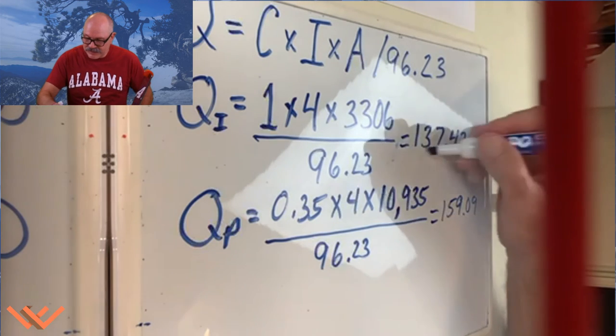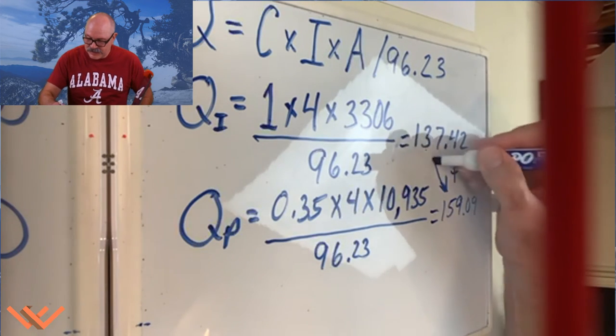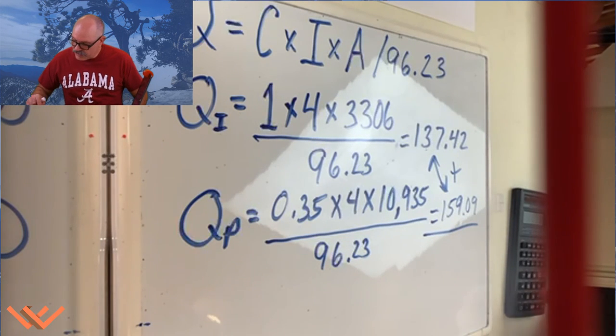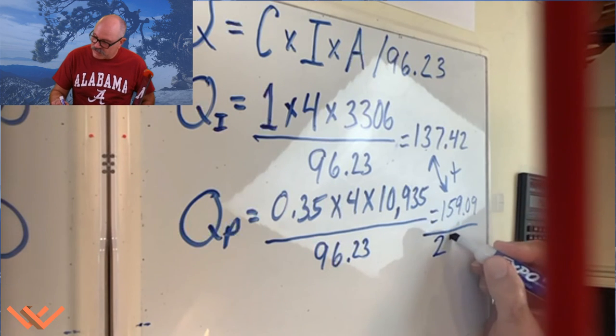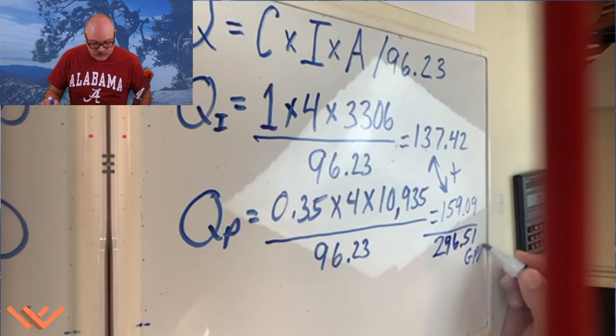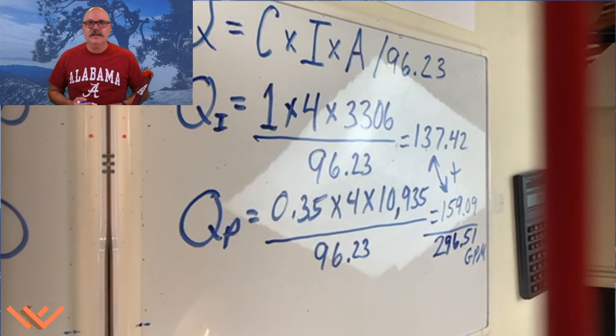So now I take this number and I add it. So these two get added together and I'm just going to do it out here. Let's see here. So I have 137.42 plus 159.09 equals 296.51. And that's going to be gallons per minute. So that's a key number right there for determining the flow of water off the property when it has a downpour.